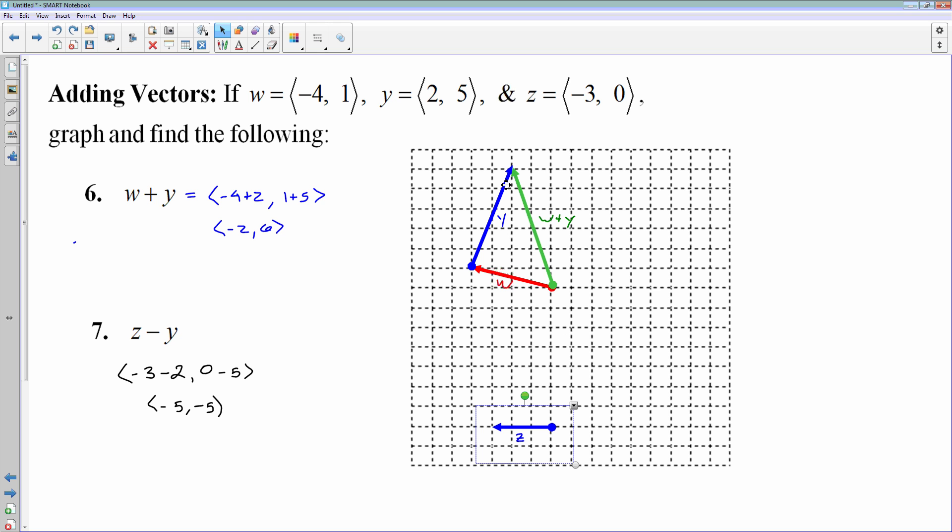Negative y is going to go in the exact opposite direction. It's going to go left 2 and down 5. It has the exact same length. The length of negative y is the same as the length of positive y. You just go in the exact opposite direction. So here's my vector negative y. Let me group those together so I can slide them around.